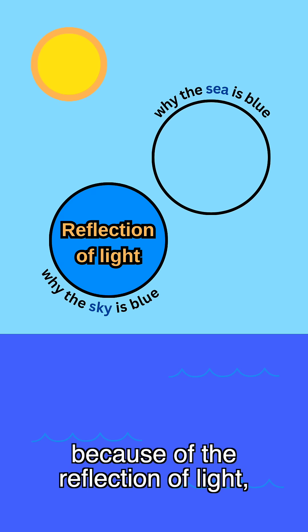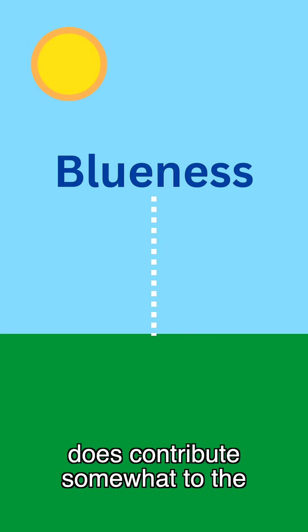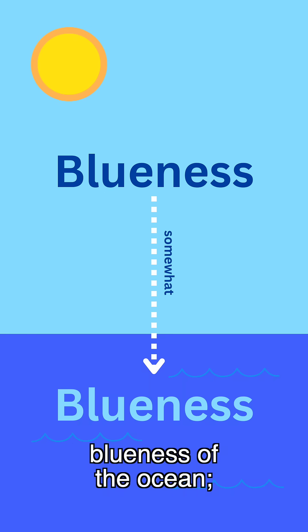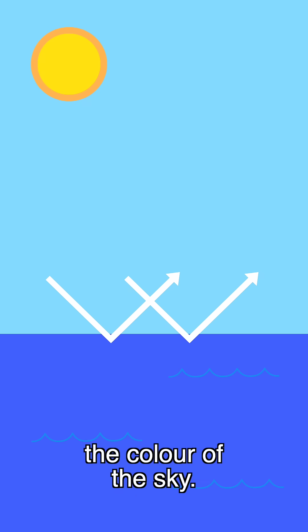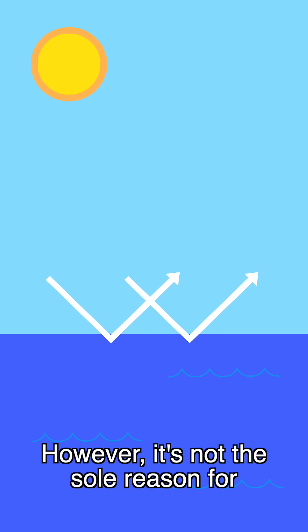The sky is blue, therefore, because of the reflection of light, and the blueness of the sky does contribute somewhat to the blueness of the ocean. The ocean does reflect some of the colour of the sky. However, it's not the sole reason for the ocean's colour.